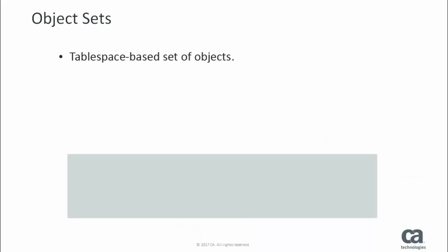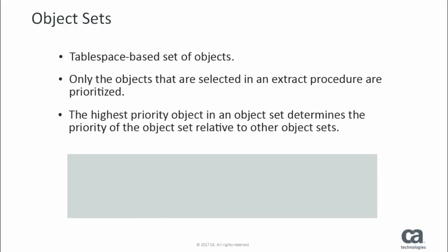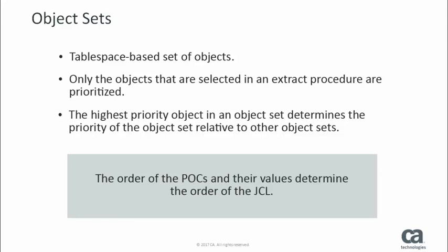An Object Set is a tablespace-based set of related objects and is composed of a tablespace with its related indexes in all its partitions. Only the objects that are selected in an Extract Procedure are prioritized, even though other unselected objects can exist in the Object Set. The highest priority object in an Object Set determines the priority of the Object Set relative to other Object Sets. Therefore, the order of the POCs and their values determine the order of the JCL.